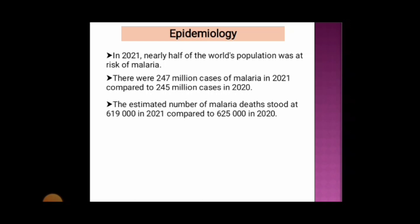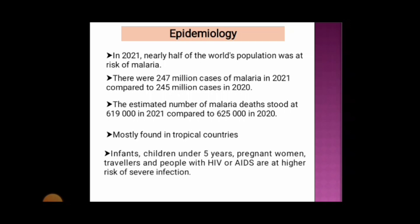This was reported in the World Malaria Report 2022. This disease is mostly found in tropical countries. Infants, children under 5 years, pregnant women, travelers, and people with HIV or AIDS are at higher risk of severe infection.